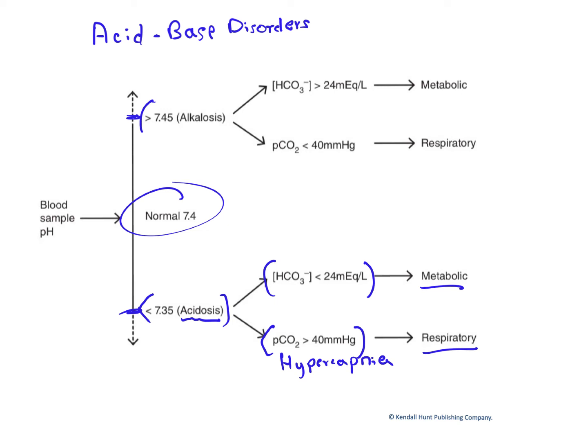On the other end of the spectrum, we have alkalosis — arterial blood pH greater than 7.45. There are two primary causes for that. One is an arterial blood pCO2 less than 40 millimeters of mercury. This is called hypocapnia. Here, the lungs are eliminating CO2 too rapidly into the atmosphere. In this case, we're tampering with the carbonic acid equation, but shifting it to the left — less than normal CO2, less hydration to produce carbonic acid, less dissociation into protons and bicarbonate, and blood pH shifts upward. We call that type of alkalosis respiratory alkalosis.